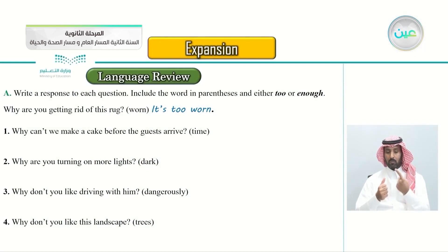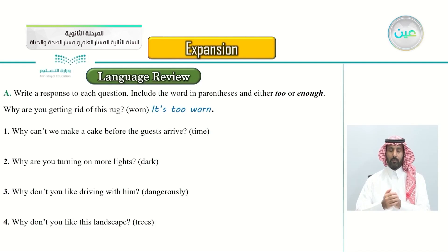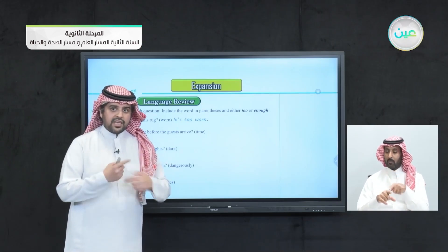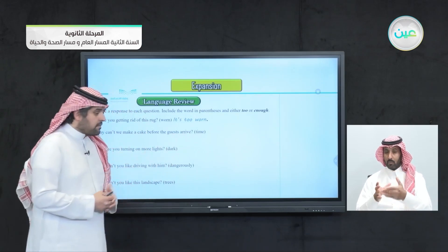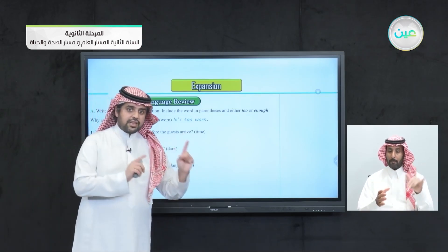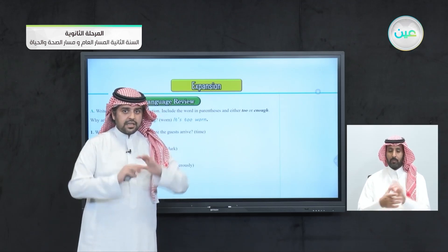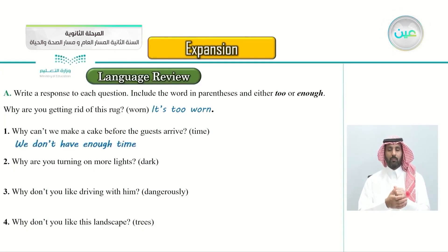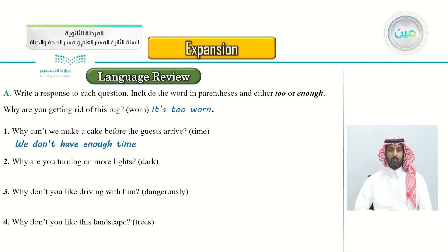Number one: why can't we make a cake before the guests arrive? The word is 'time'. Use 'too' or 'enough'. In this scenario, the answer is: we don't have enough time. 'Enough' comes before the noun 'time'. We don't have enough time to make a cake.